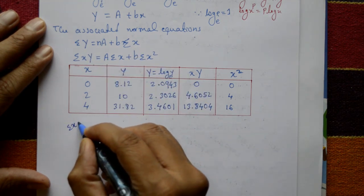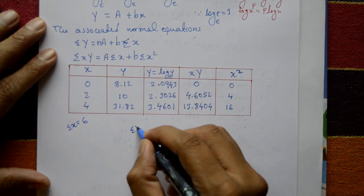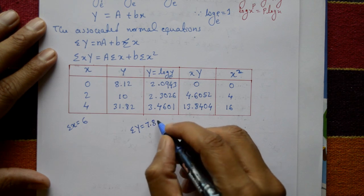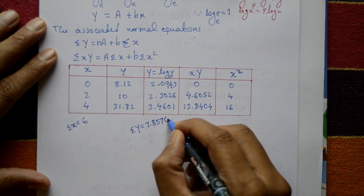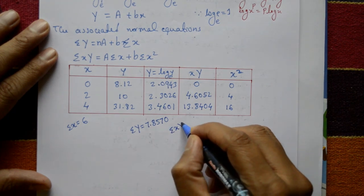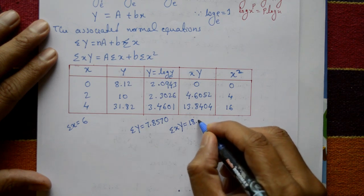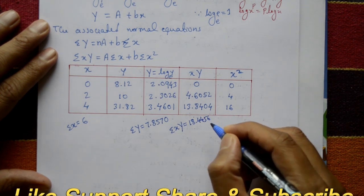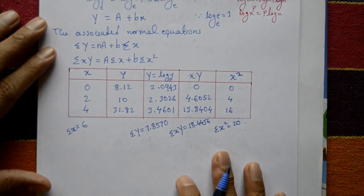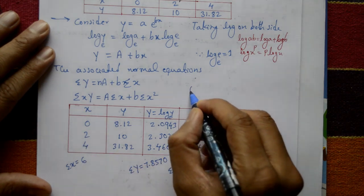Taking summations: Σx = 6, ΣY = 7.8570, Σ(xY) = 18.4456, Σ(x²) = 20. The total number of data points n = 3.